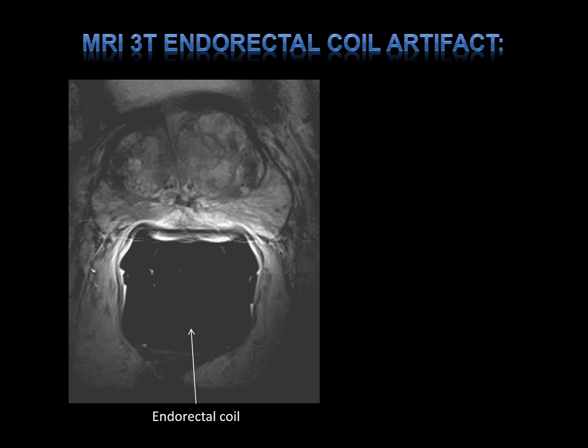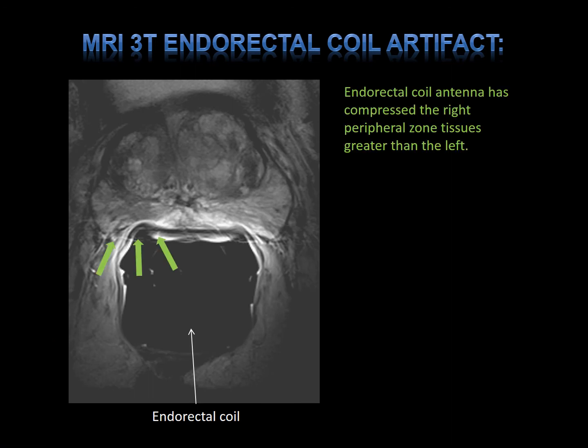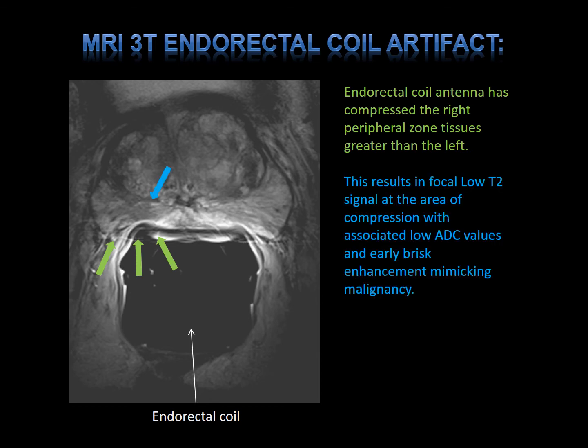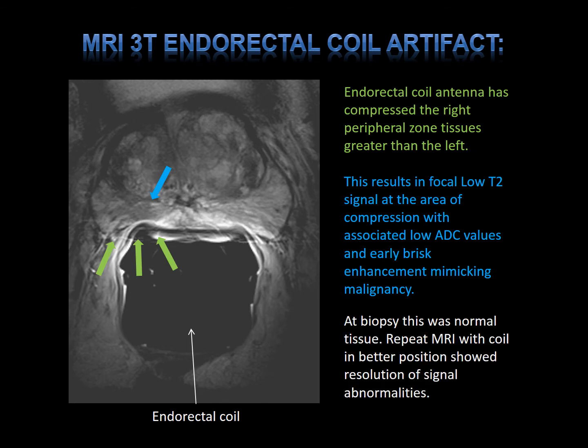As seen here on a T2-weighted image with an endorectal coil MRI, notice the uneven compression of the right peripheral zone greater than the left. This results in a focal low signal at the area of compression with associated low ADC values and early arterial enhancement, mimicking malignancy. At biopsy, this is normal. Repeating the MRI with the coil in better position showed complete resolution of the abnormalities.